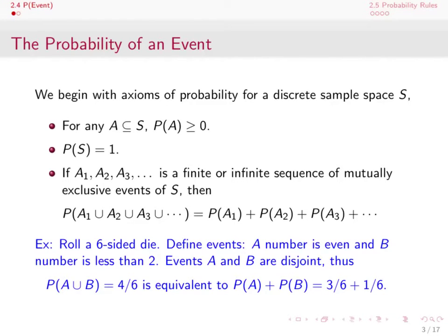Let's look at a little example. Suppose we roll a six-sided die and define two events: A, that the number on the die is even, and B, that the number is less than 2. These two events are disjoint — it's not possible to have an even number that's less than 2 simultaneously. The probability of A union B is the event the number is even or less than 2. There are three even numbers, 2, 4, and 6, and only one number less than 2, which is 1. That's 4 outcomes out of 6 possible.